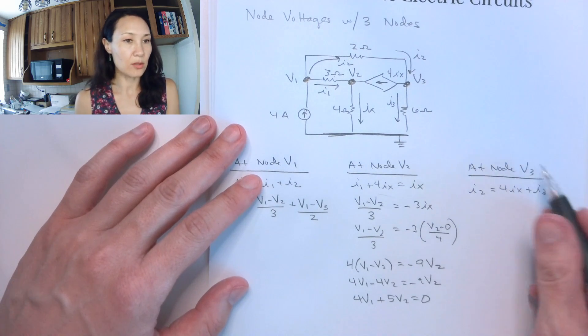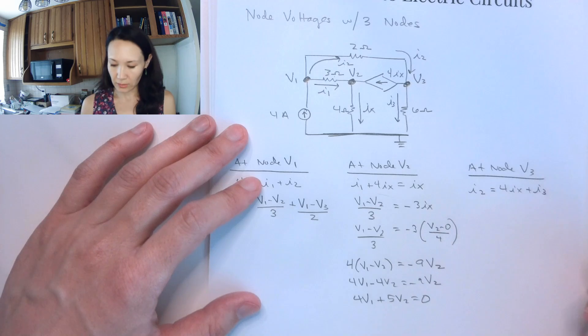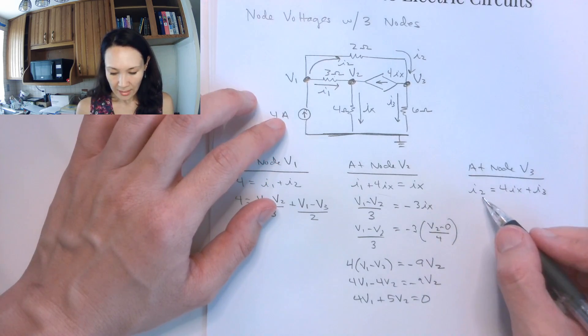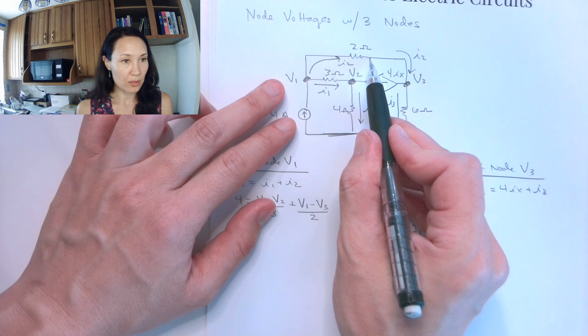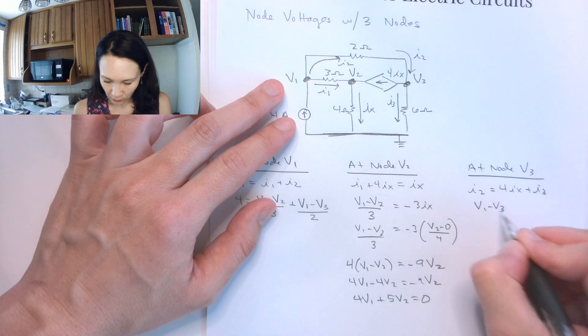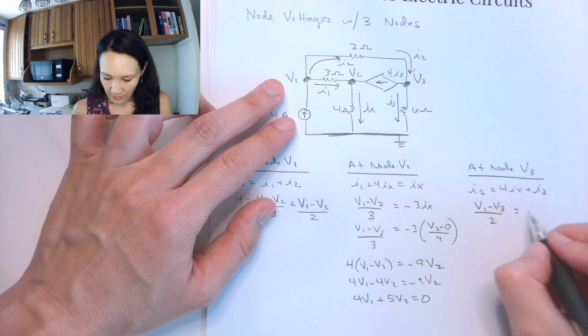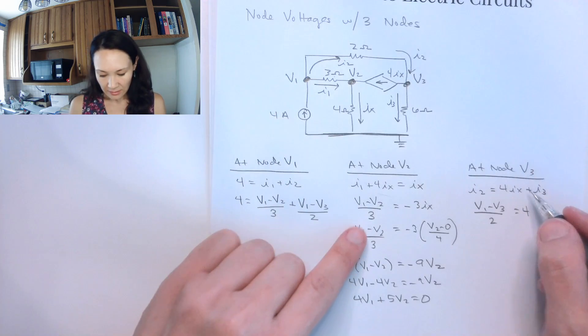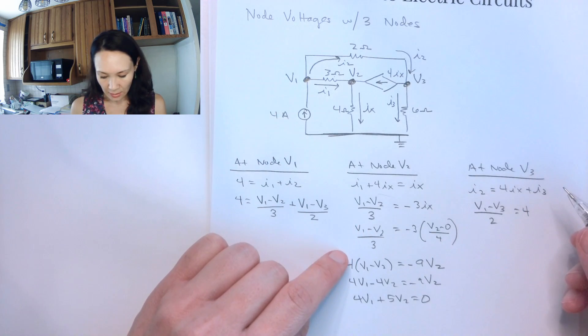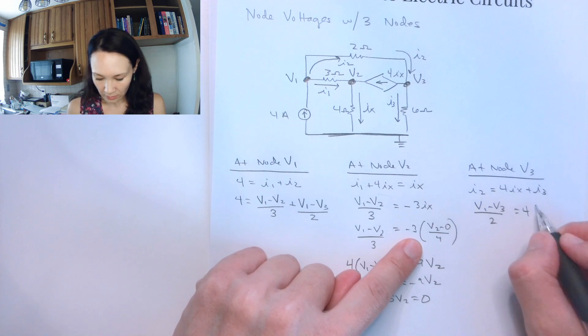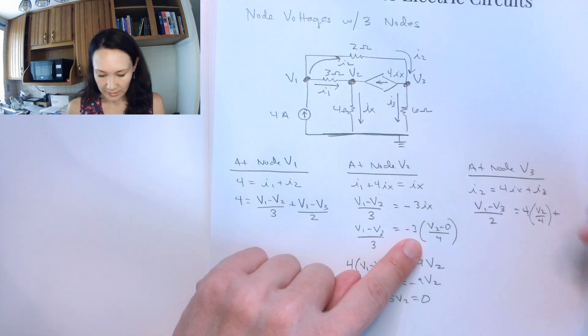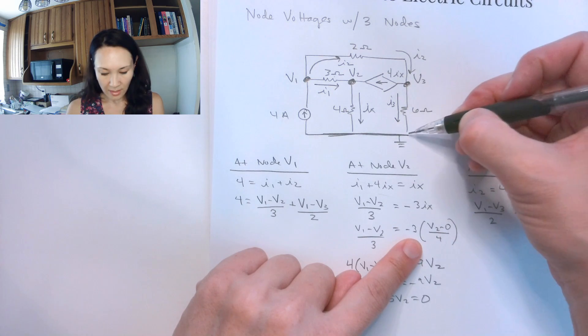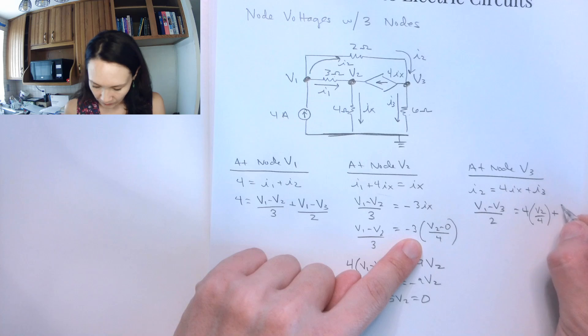So let's continue on. We're going to have to make a similar substitution over here at node V3. I'm going to replace I2 with V1 minus V3 over the resistor between V1 minus V3 divided by 2. And that's equal to 4 times IX. I'm going to make this substitution for IX that I did over here. I know that IX is V2 over 4, V2 over 4. And then I'm going to replace I3 with V3 minus 0 over the resistor between, which is 6. V3 over 6.